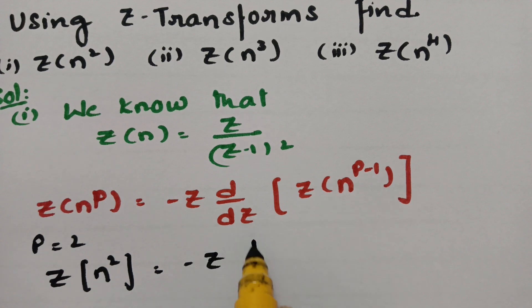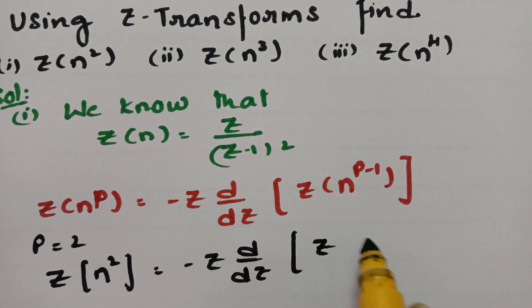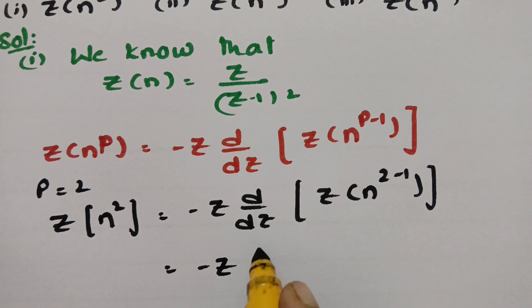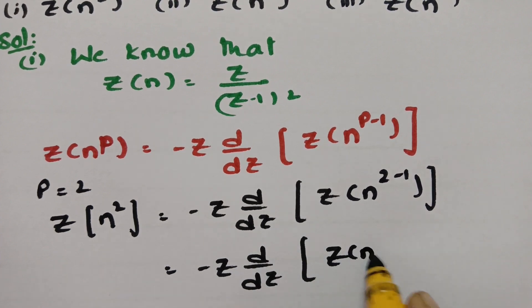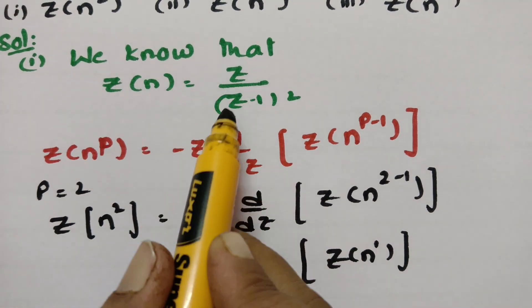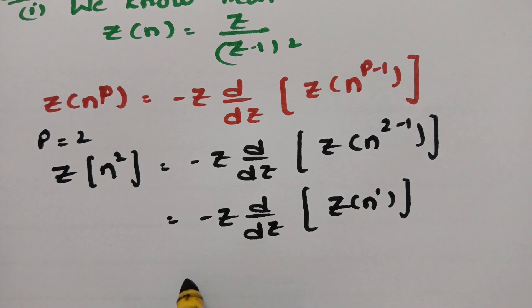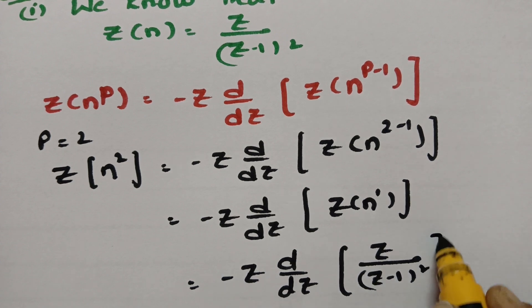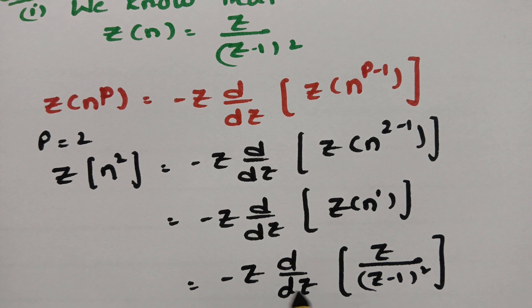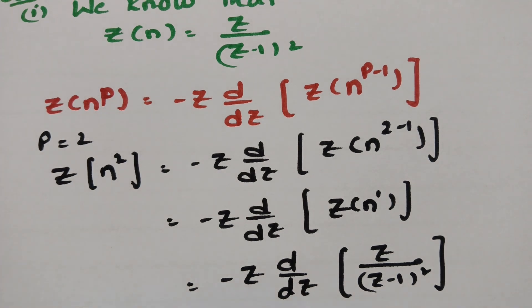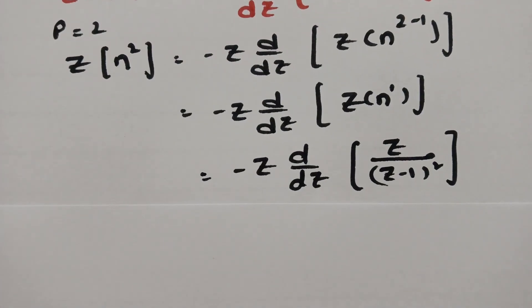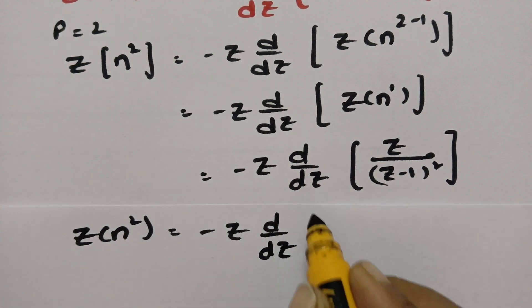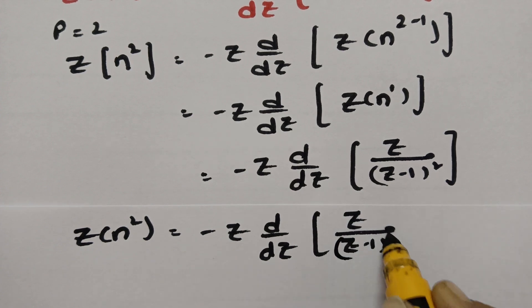Therefore, Z of n square is equal to minus z into d by dz of Z of n to the power 2 minus 1, which becomes minus z into d by dz of Z of n to the power 1. Since Z of n equals z by z minus 1 whole square, this becomes minus z into d by dz of z by z minus 1 whole square.